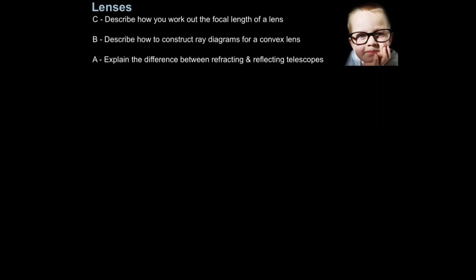In this tutorial we'll look at lenses. The first aim is to describe how you work out the focal length of a lens, then describe how to construct ray diagrams for a convex lens, and finally explain the difference between refracting and reflecting telescopes.